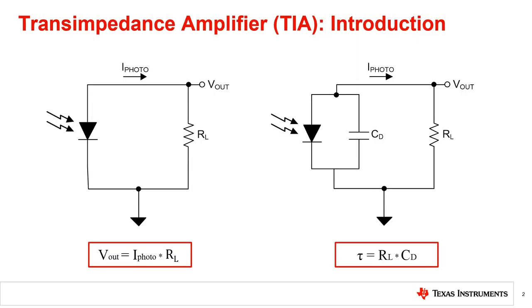To start simply, a transimpedance application boils down to converting a current to a voltage. One of the simplest methods to achieve current to voltage conversion uses only two components, a current source and a resistor, leaving the desired output voltage to be computed using Ohm's law, V equals IR. For a given input current, increasing the load resistor will proportionally increase the output voltage, or in other words, increases the gain of the application, or referred to as the transimpedance gain.